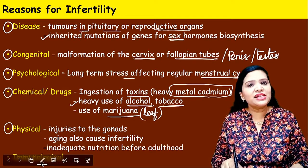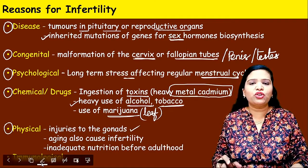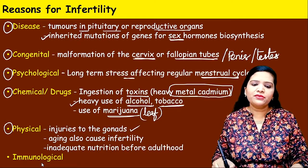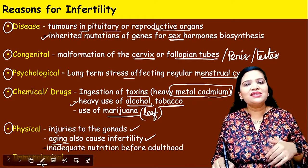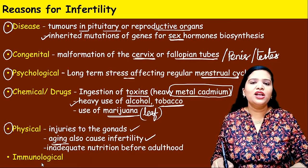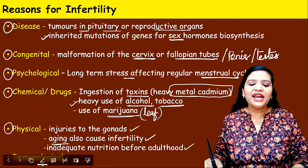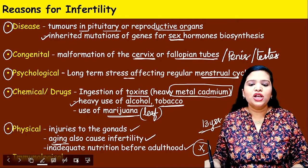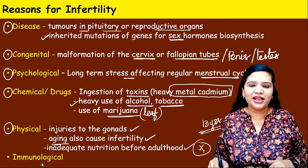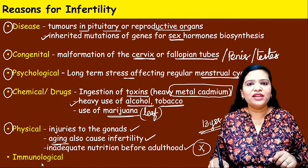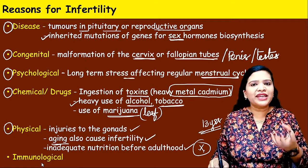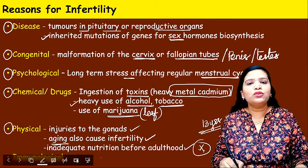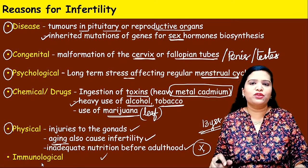Physical reasons include injuries to the gonads — accidents, injury, or trauma affecting the male or female reproductive organs. Aging is also a physical factor: as age increases, the ability to reproduce decreases. Inadequate nutrition before childhood is important too — what children eat before puberty highly affects their future reproductive health. The more healthy foods kids eat during childhood, the better for their reproductive health. Immunological reasons are also a factor.